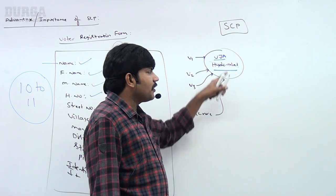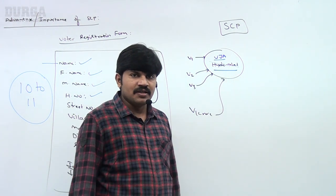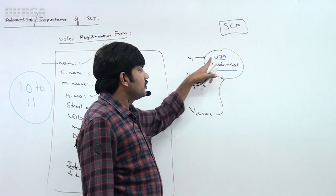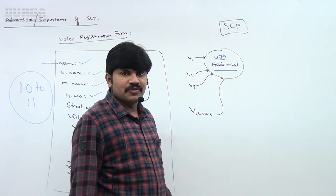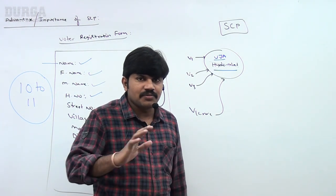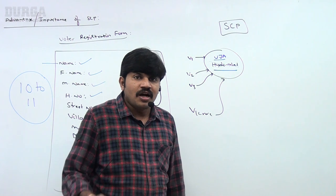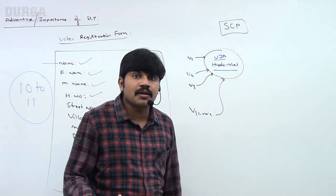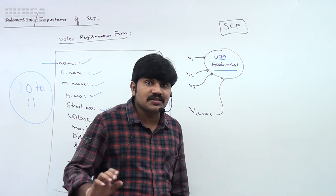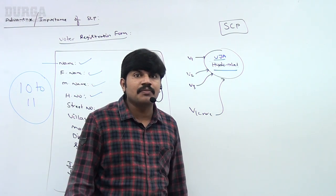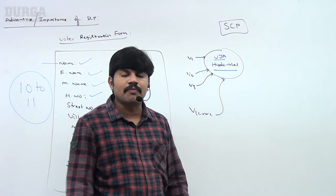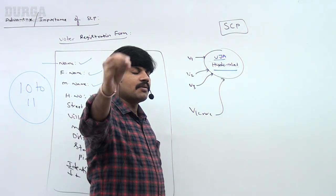So forget about memory benefit — now the application starts behaving abnormally. Today morning I checked my city name and it is Hyderabad. After 10 minutes I checked and suddenly my city name became Vijayawada. After another 10 minutes I checked and suddenly my city name became Delhi. It is always a bigger problem — abnormal behaviour.